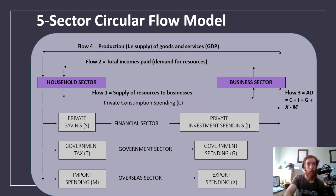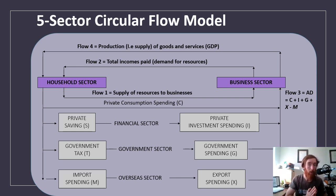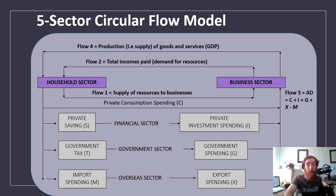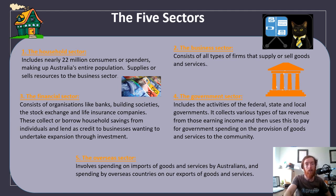You might notice the aggregate demand equation ignores government tax and savings. The reason is that they're not actually leaving the economy — they're just not being used right now, so we don't need to include them. When we have the total level of aggregate demand, businesses respond by creating goods and services — that's the production of all goods and services, also known as GDP. Those goods and services go to households, businesses demand more resources, and it flows on and on — that's essentially what the five-sector circular flow model shows.